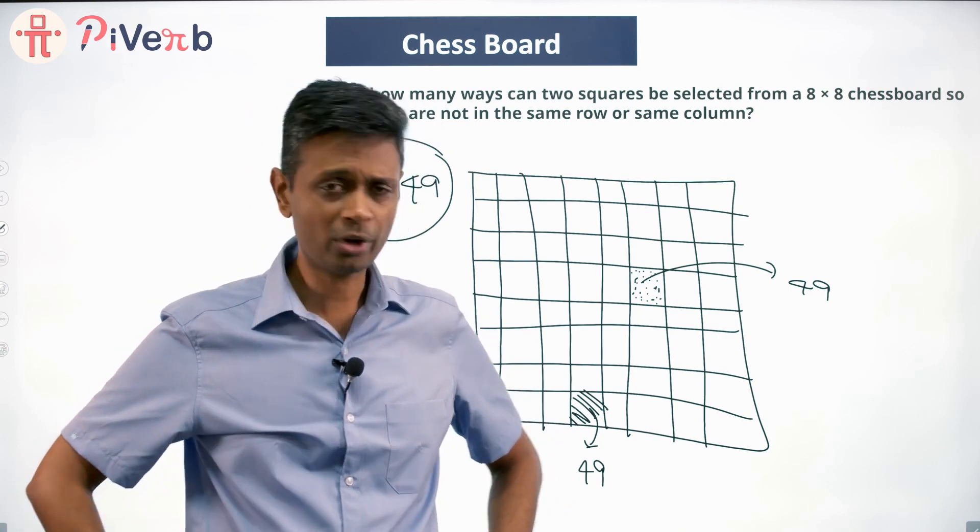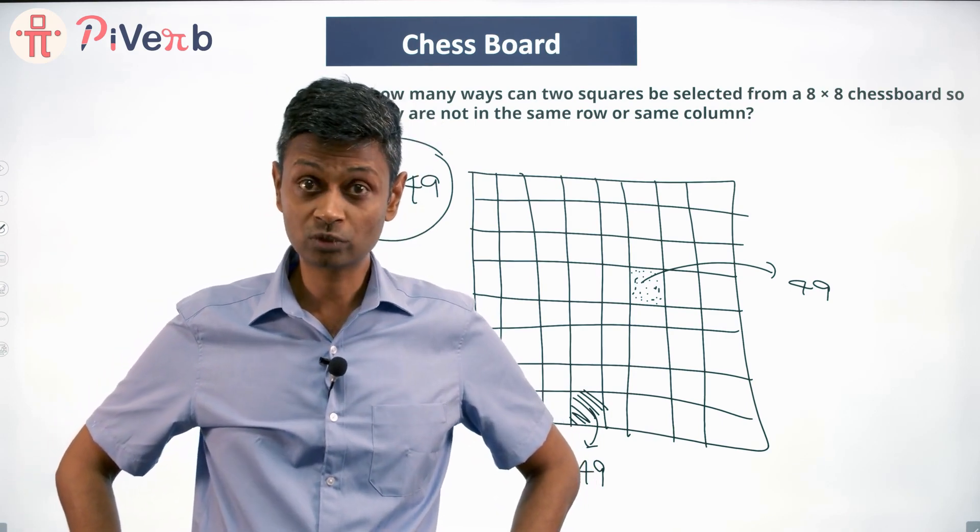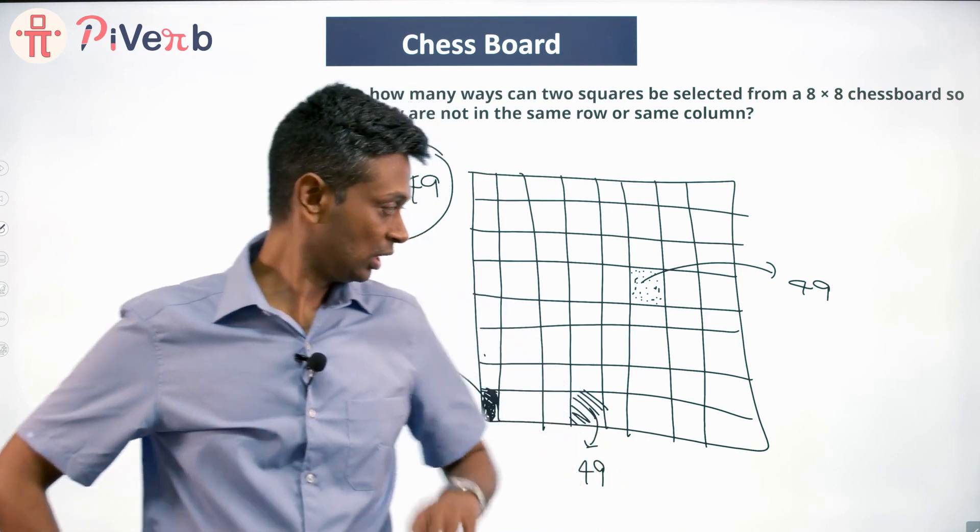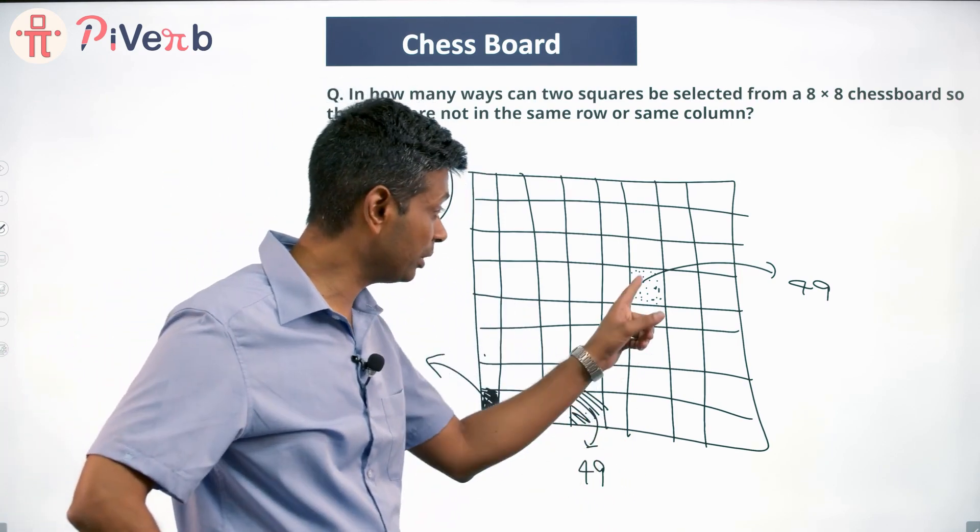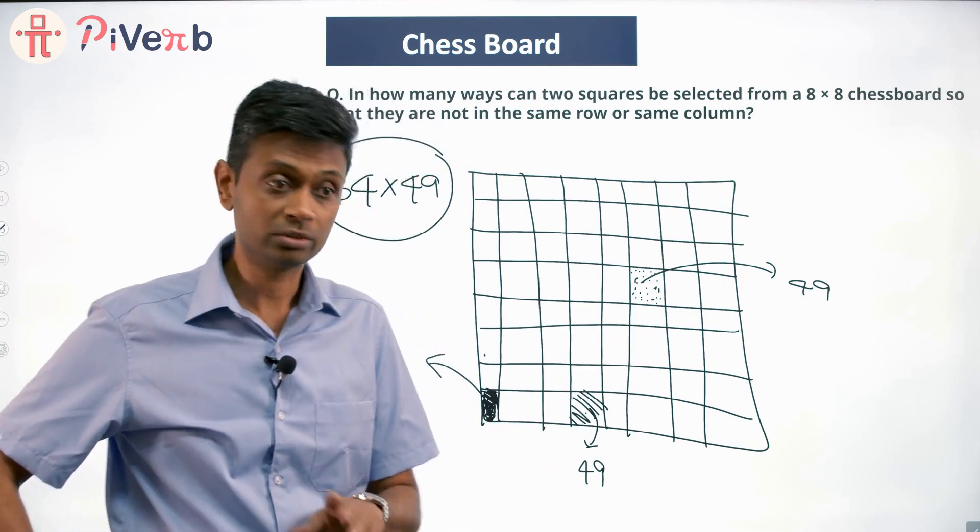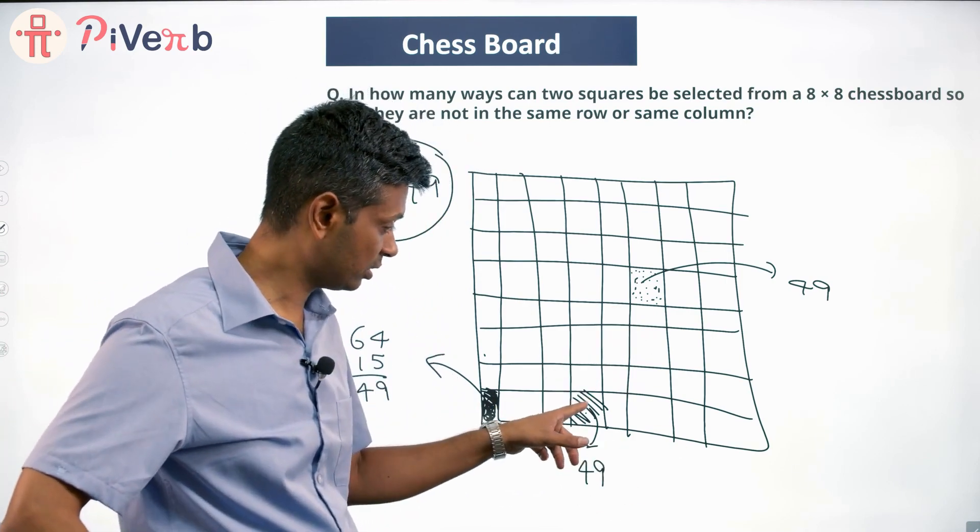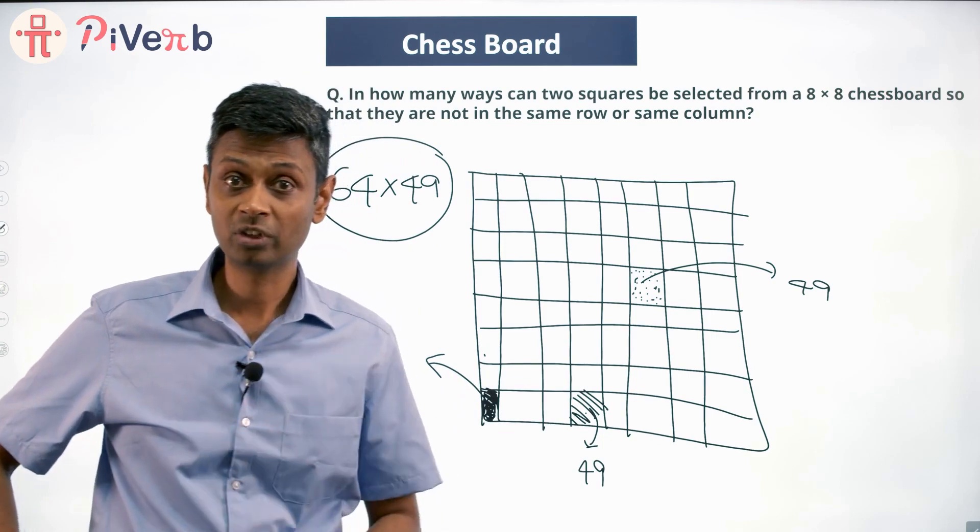Every time you do counting questions, you have to pause and say, okay, am I counting something twice over? In this question, imagine suppose your first square had been this and your second square had been this. That will be counted. This is one of the 64 squares I select, and then I've selected this.